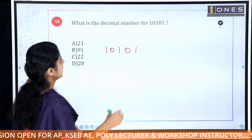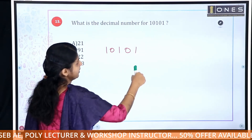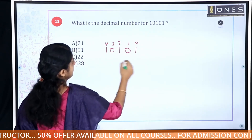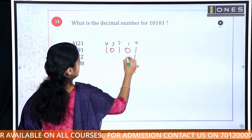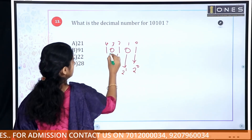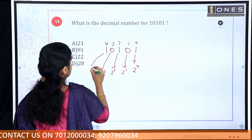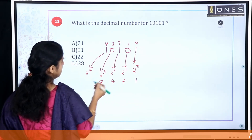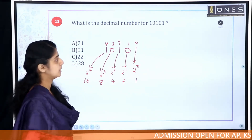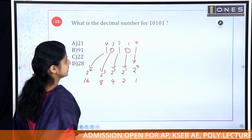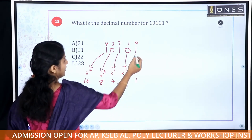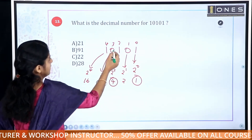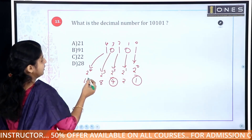The place values for binary are powers of 2: position 0 is 2⁰, position 1 is 2¹, position 2 is 2², position 3 is 2³, position 4 is 2⁴, giving values 1, 2, 4, 8, 16. For binary 10101: 0 into 8 and 1 into 16.